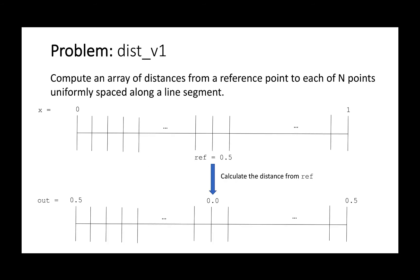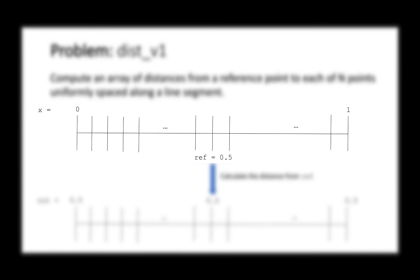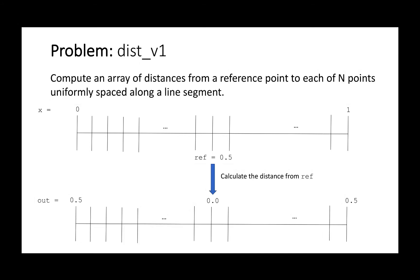The problem I would like to solve is the following: I would like to calculate an array of distances from a reference point set to 0.5 to each of n points uniformly spaced between 0 and 1 along the line segment. In this exercise there are two computations. First, I want to assign the position between 0 and 1 to each of the n initial points — we will call this the scale operation. Second, I want to calculate the distance between each element of the array and the reference point set to 0.5 — we will call this the distance operation.